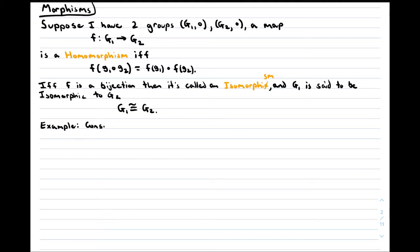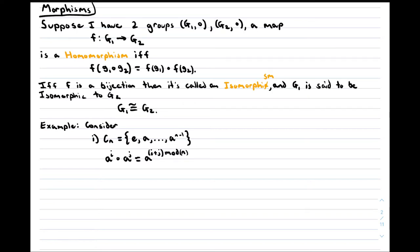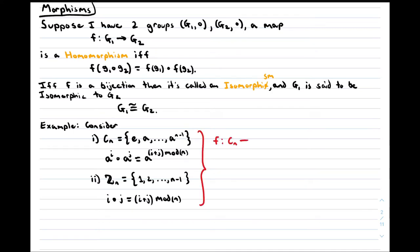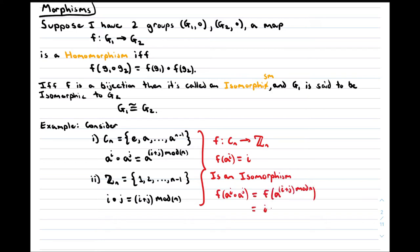As a basic example, we will consider the cyclic group of order n. The elements are the identity, a, a squared, etc., up to a to the n minus 1. Then a to the n is just equal to the identity and you get back to where you started, which is why it's called the cyclic group. The group composition law can be stated using modulo addition: a^i combined with a^j is a^(i+j mod n). Consider another group Zn, where the elements are the integers from 0 to n minus 1 and the composition law is simply addition modulo n. There is an isomorphism between these groups where you map a^i into i. This preserves the group composition law and the function is a bijection, so we say Cn and Zn are isomorphic.